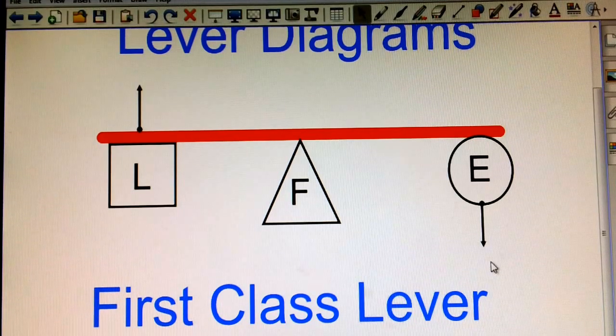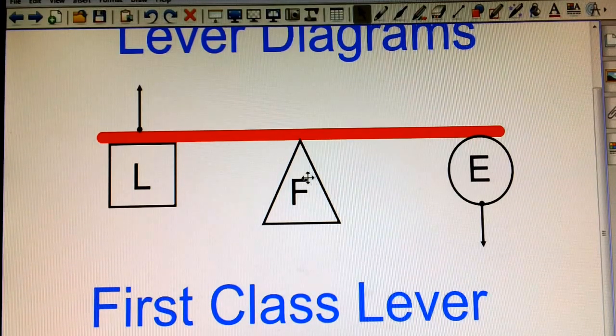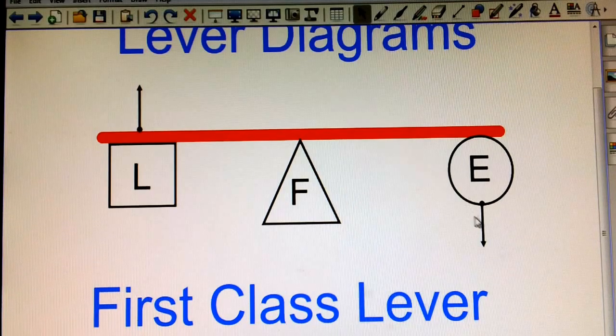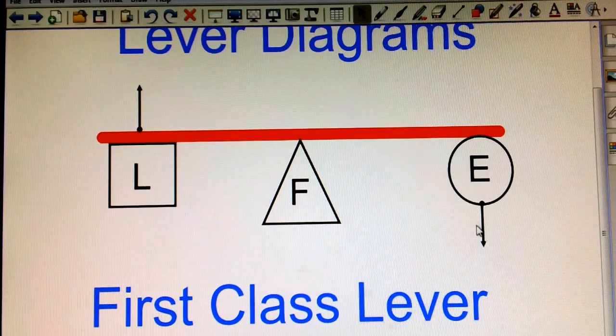The arrow indicates the direction that we're going to apply force to the effort to lift the load. So this is a diagram of a first class lever. Again, in a first class lever, the fulcrum is in the middle. The effort is applied in a downward direction.